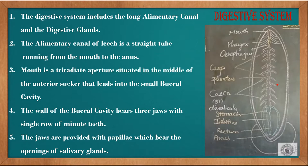The wall of the buccal cavity bears three jaws with a single row of minute teeth. The jaws are provided with papillae which bear the openings of the salivary gland. So the jaws have the salivary gland openings.